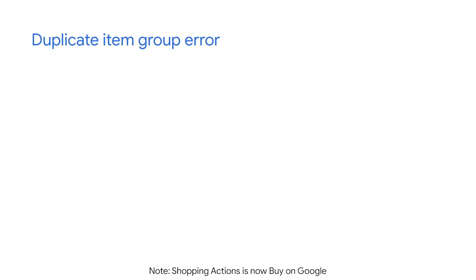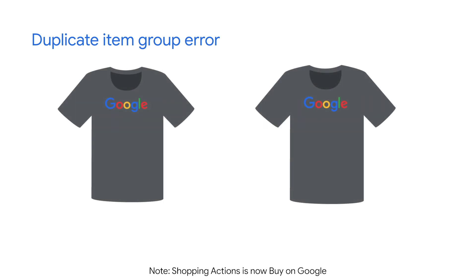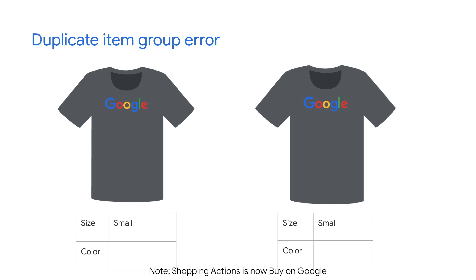So, what does an item group issue look like? I'm selling two Google t-shirts. They're the same size but have different colors. I know they're different, but I forgot to give the shirts a color in my feed. Without these colors, Google is not able to tell the difference between the two and thinks that they're duplicates. But that can be quickly fixed by adding a color value to these offers.